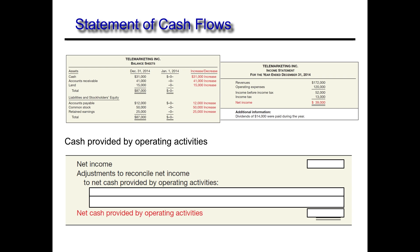You can see from the balance sheet this looks like it's the first year of operations because all of our balance sheet accounts started with a zero balance. To create a statement of cash flows we want the change in each account, so we need the change from beginning to end. That's why we have two sets of data, and you can see in red the actual change in these accounts — whether they increased or decreased throughout the year.